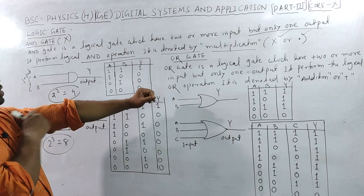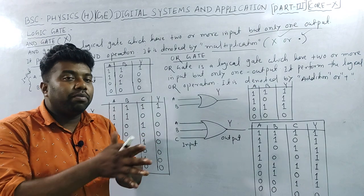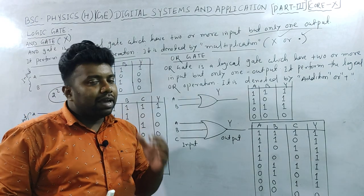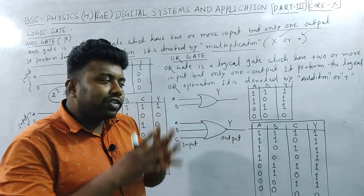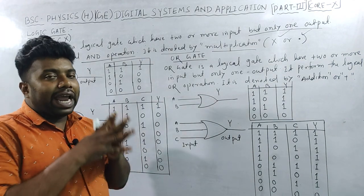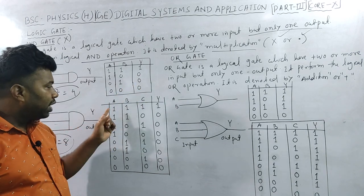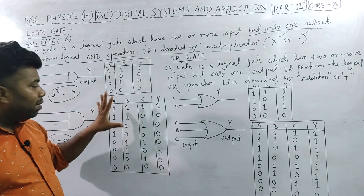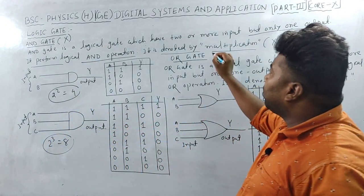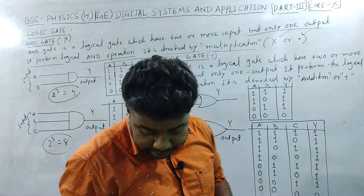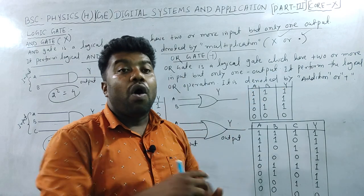The AND gate is a logic gate which performs mathematical multiplication. If you use the AND gate, when both inputs are 1 the output is 1; when any input is 0, the output is 0. The AND gate or AND circuit performs logical AND (multiplication) operation.